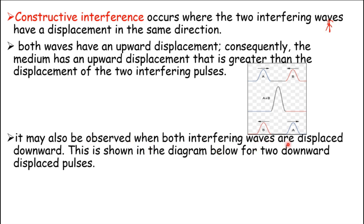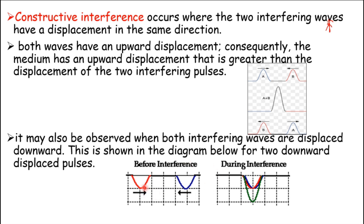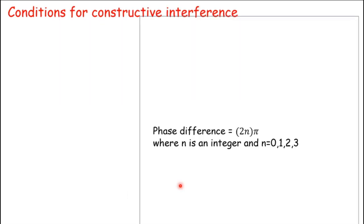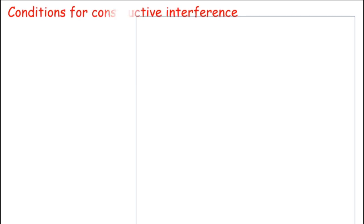Constructive interference may also be observed when both interfering waves are displaced downwards. When two downward-displaced pulses move towards each other and overlap, the resultant equals the sum of the two. After interfering, the red wave moves to the right region and the blue wave moves to the left region, just as they were moving before interference.